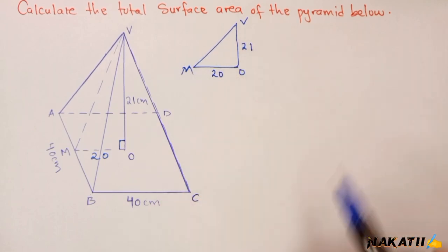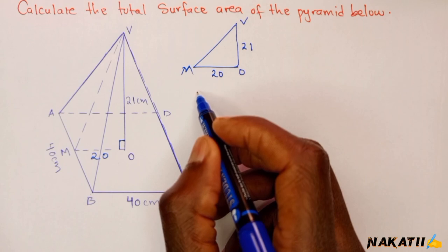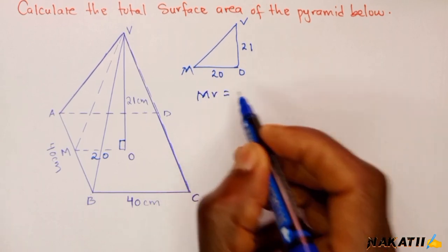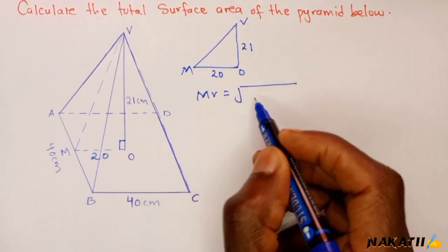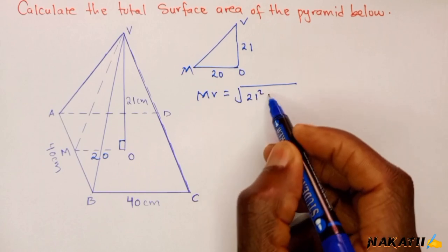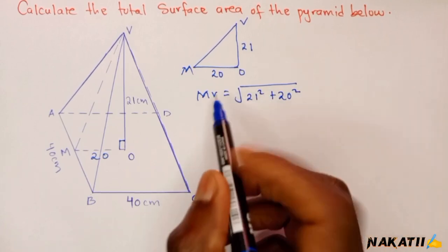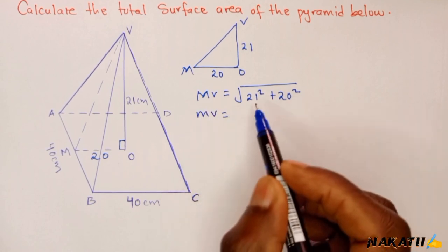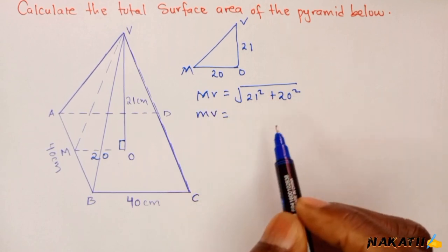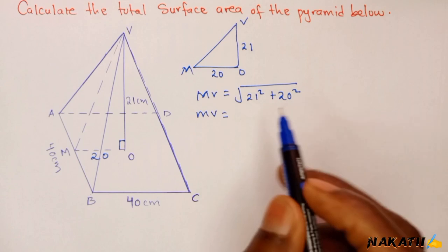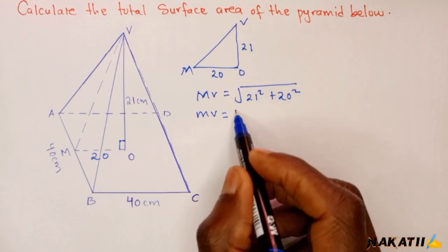Using Pythagorean theorem, we're going to say MV will be the square root of 21 squared plus 20 squared. Therefore MV will be 21 squared plus 20 squared. You get it is 841.